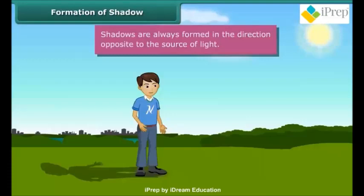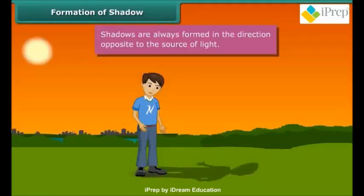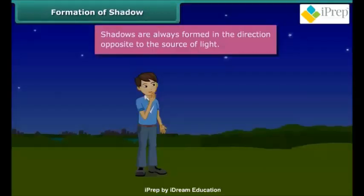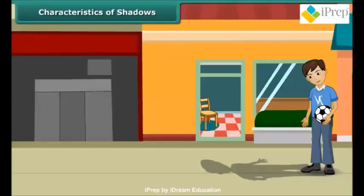In the morning, since you were facing the sun, the shadow was behind you. In the evening, the sun was behind you, causing the shadow to be formed in front of you. When the sun sets, there was no light, hence there were no shadows.